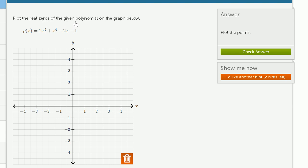Plot the real zeros of the given polynomial on the graph below. They give us p(x) is equal to 2x to the fifth plus x to the fourth minus 2x minus 1.